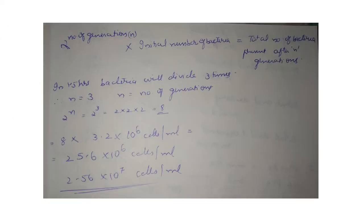2 raised to the number of generations, that is n, times the initial number of bacteria, is equal to the total number of bacteria present after n generations. This is the formula for calculating it. In 1.5 hours, bacteria will divide three times, so n equals 3, where n is the number of generations.